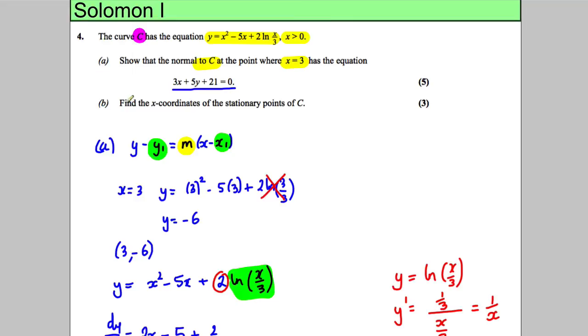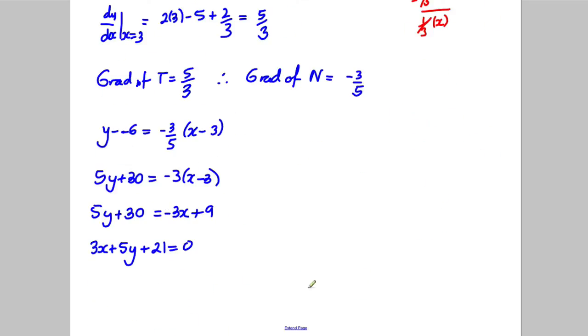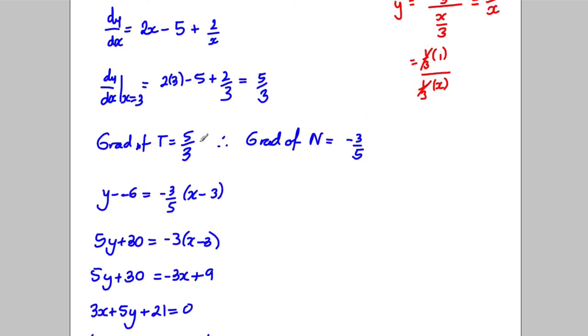The next bit says find the x coordinates of the stationary points of C. So the stationary points of C happen when dy by dx is 0. So state that to the examiner. So for stationary points, dy by dx equals 0. So we need to go up and solve the equation dy by dx is 0.